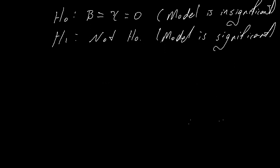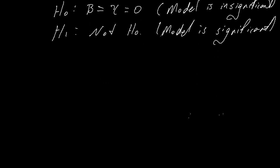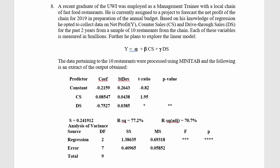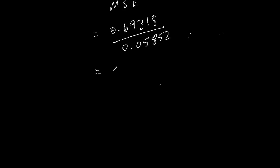We use the F-test to see whether or not we reject H0. The first thing we do is calculate our F-statistic. The formula for the F-statistic is mean squared regression divided by mean squared error. Looking back at the question, those values have already been calculated in the Minitab output. You take mean squared regression and divide it by mean squared error, and you get an F-statistic equal to 11.845.